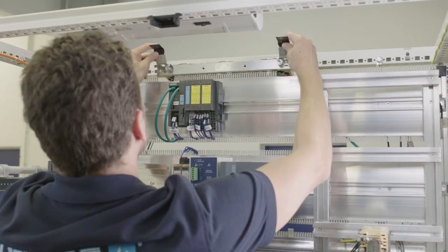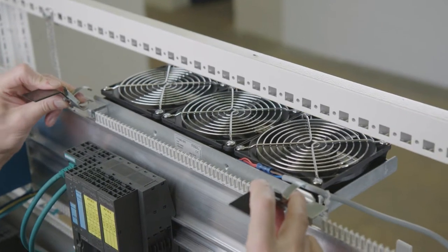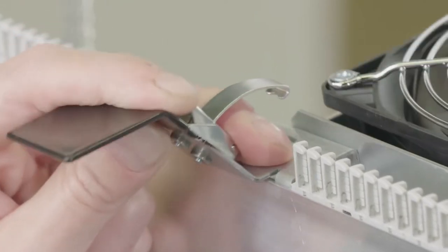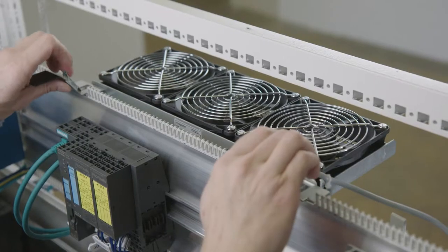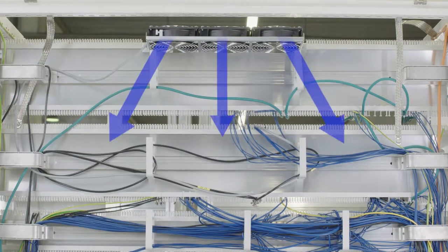An important accessory is the air blower fan to create a stable cabinet climate. The air blower is controlled by a control unit and switches on automatically as required.